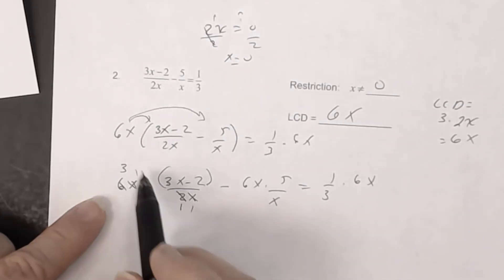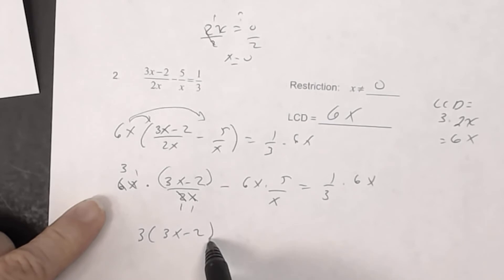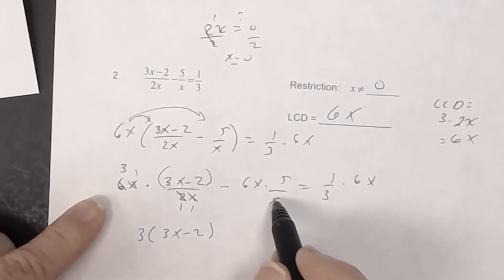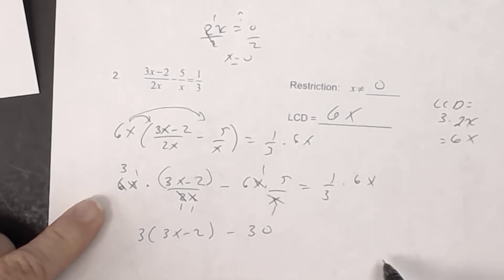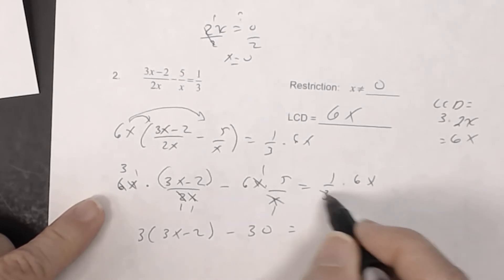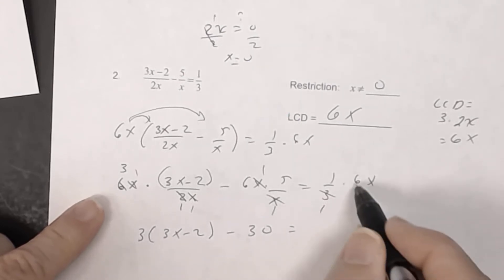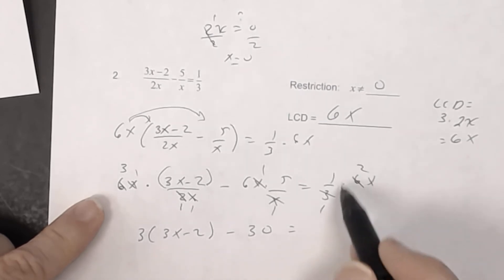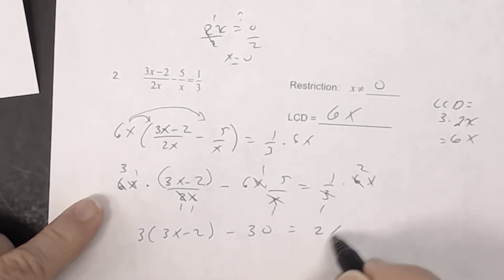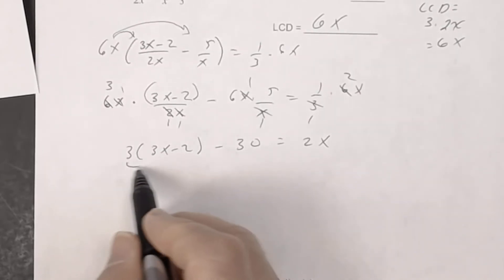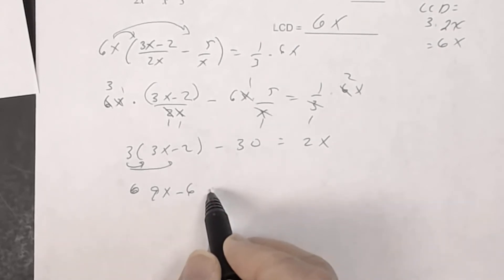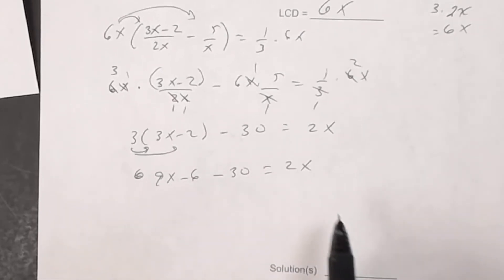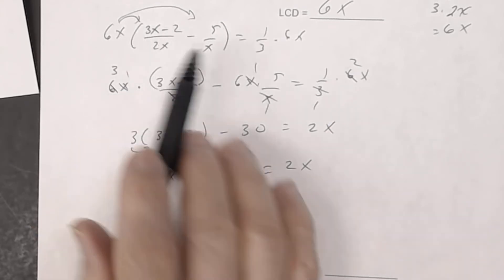The 3 multiplies all of (3x minus 2), giving 3 times (3x minus 2). The x's divide out of 6x and x, giving 6 times 5 which is 30. On the right, 3 divides into 6 to give 2x. Distributing: 9x minus 6 minus 30 equals 2x.